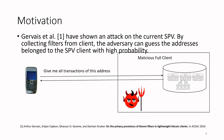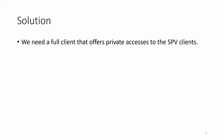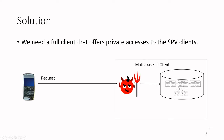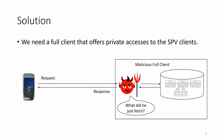However, in CCS 2014, Arthur Gervais and other researchers from ETH Zurich showed a network layer attack on this approach. In particular, by collecting multiple filters from the same client, the adversary can guess the addresses belonging to the SPV client with high probability. So a natural solution is we need a full client that offers private accesses to the thin client — when a thin client sends a request to a potentially malicious full client, the full client should not know what data the thin client fetched.